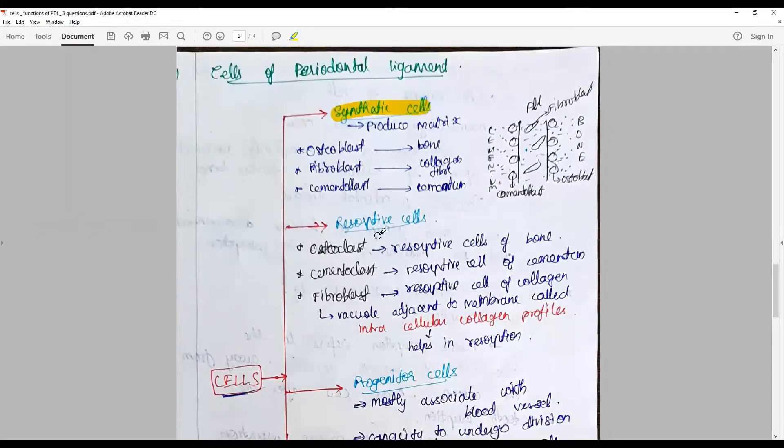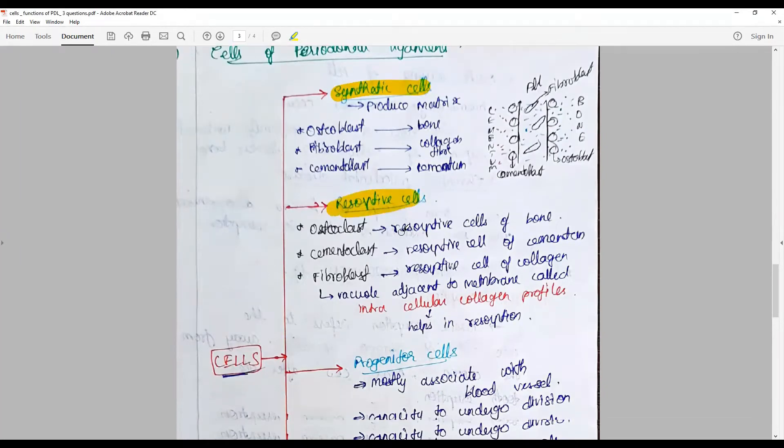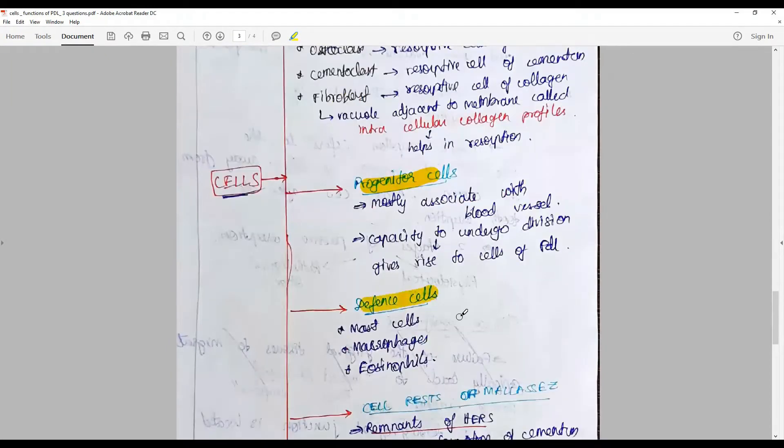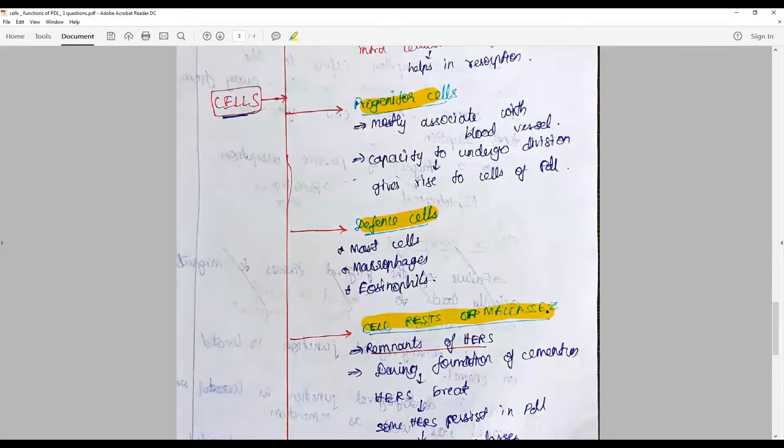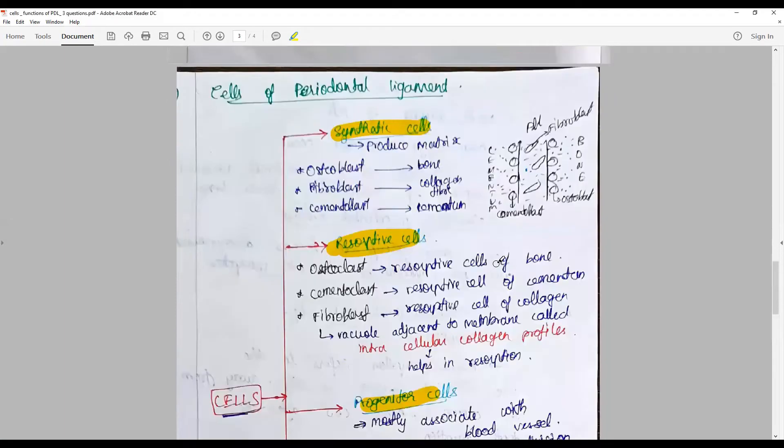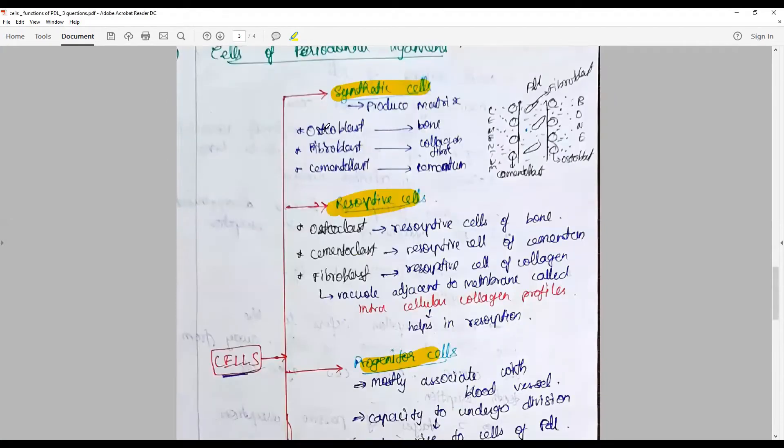So the cells could be divided into synthetic cells or that one produces matrix, resorptive cells or one that could resolve the contents, progenitor cells, different cells, then some cell rest of Malassez. These are the cells, so let us go into each. We have osteoblasts that synthesize bone.